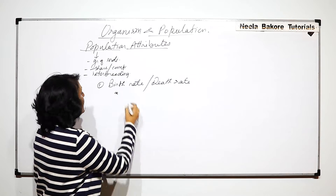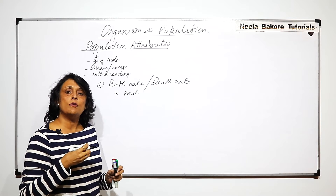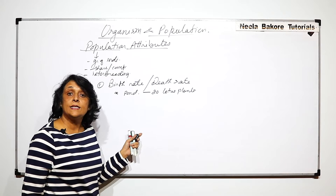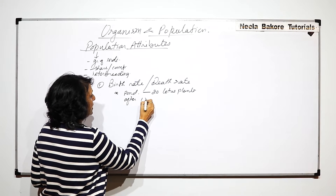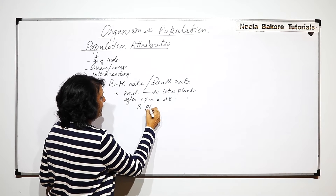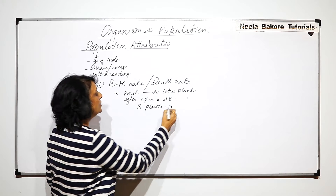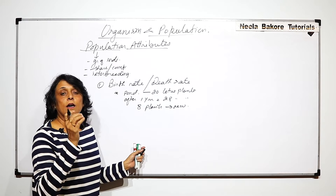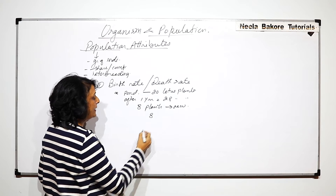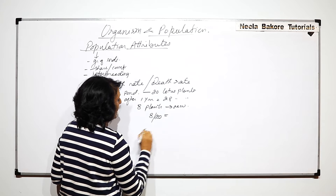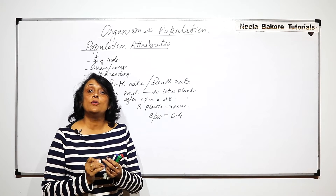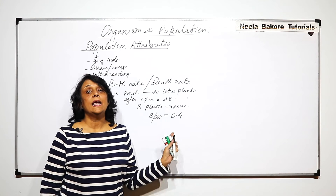Let us take an example. Say in a pond at a given time there are 20 lotus plants, and in the same pond after one year we find there are 28 lotus plants. That means in one year, 8 plants were added. To find the birth rate or formation rate: 8 new added divided by the original 20 gives us 0.4. So the birth rate or addition rate in this population is 0.4.